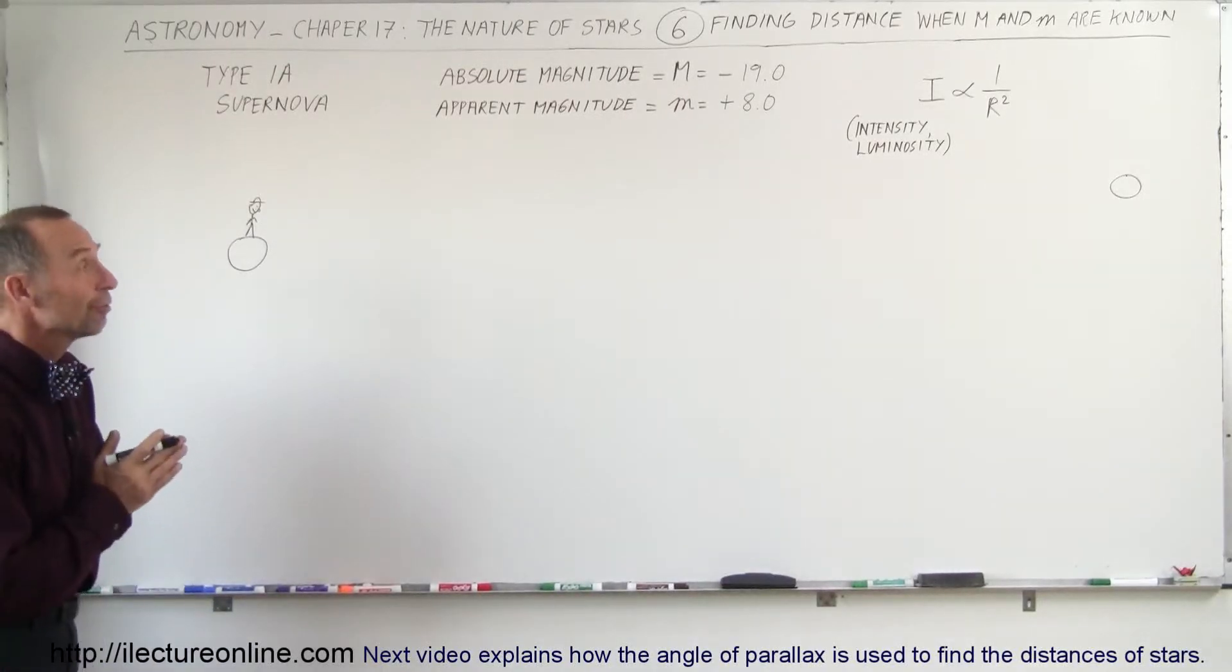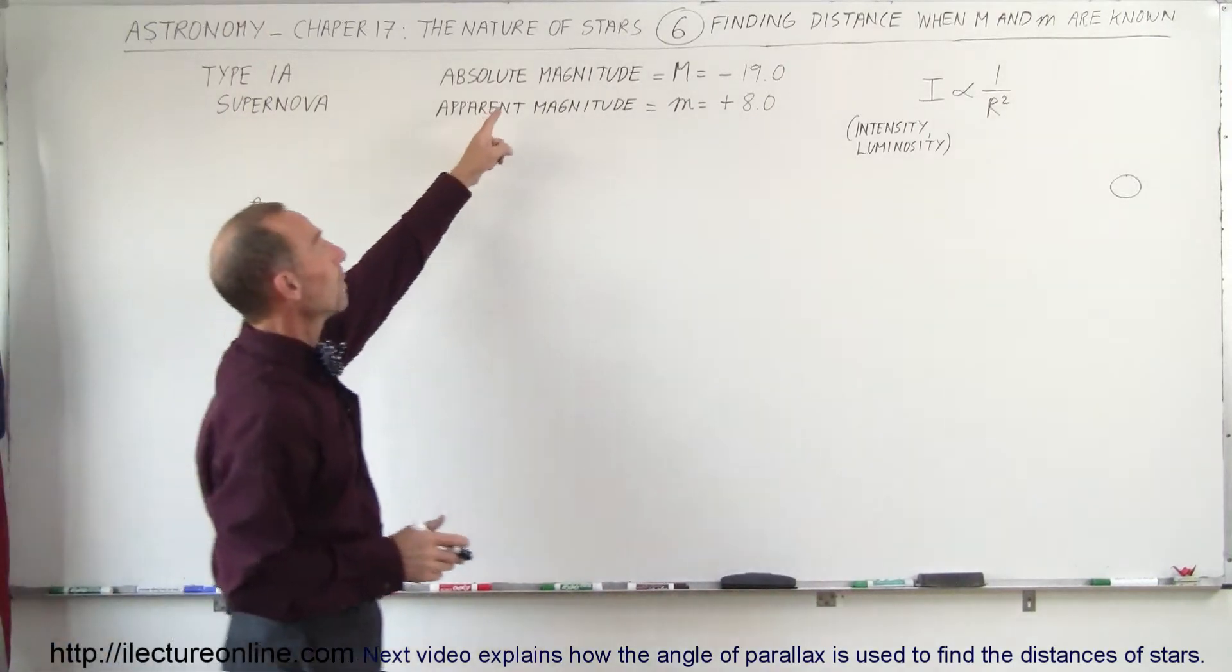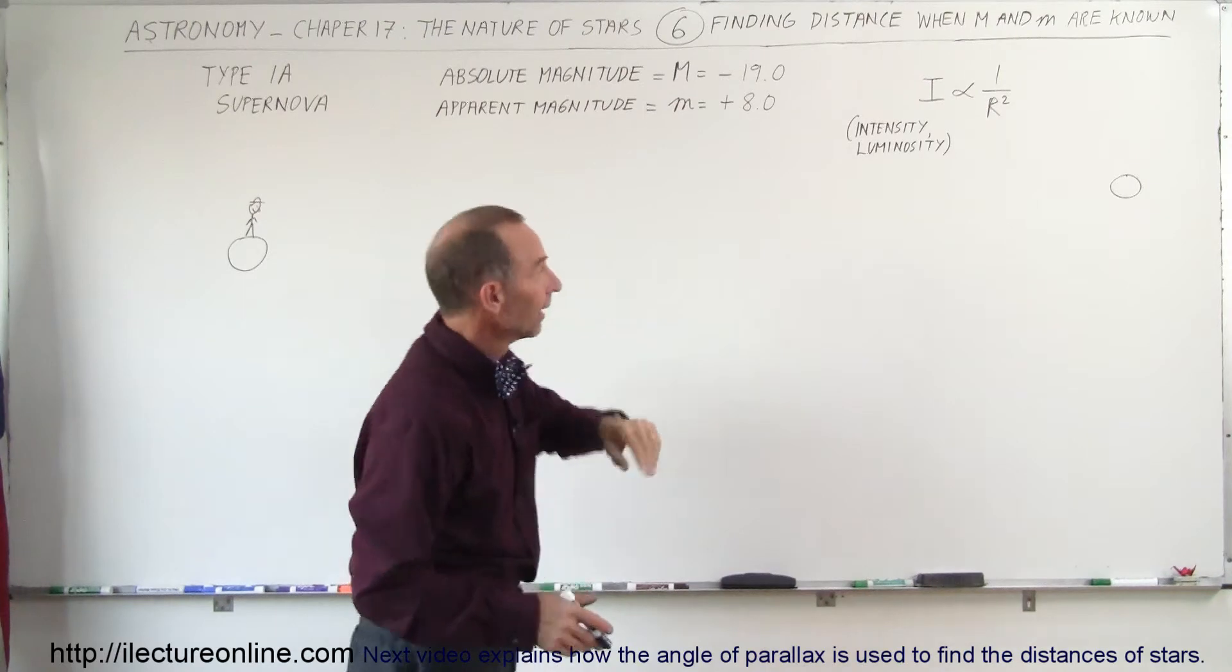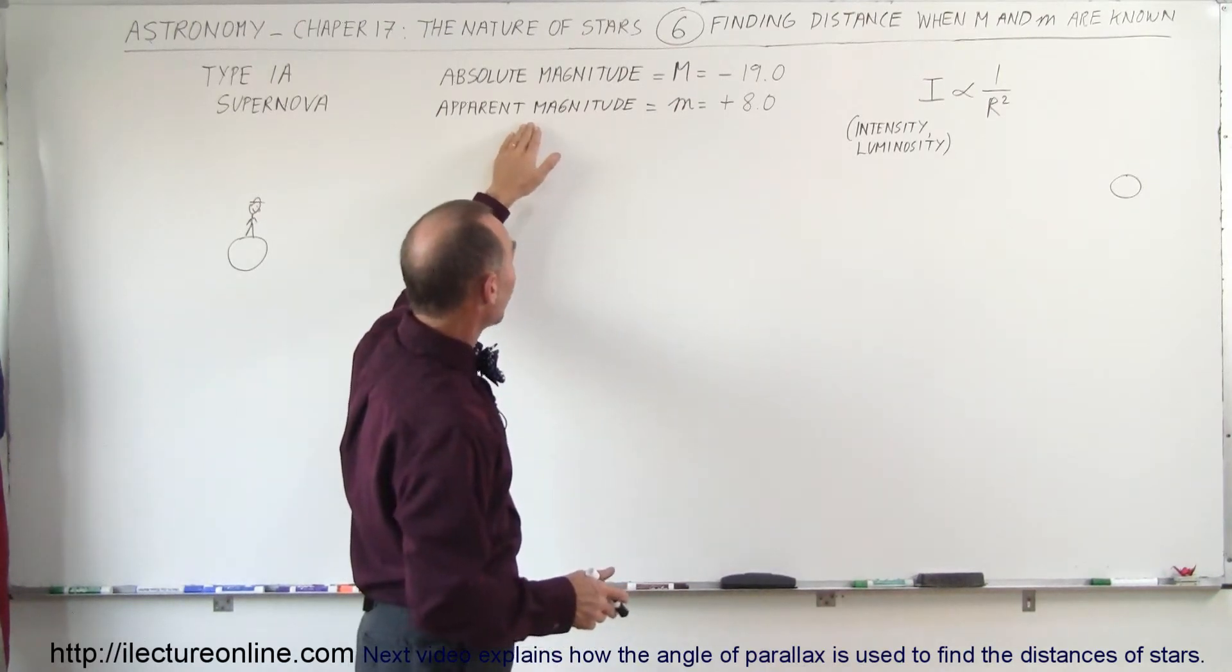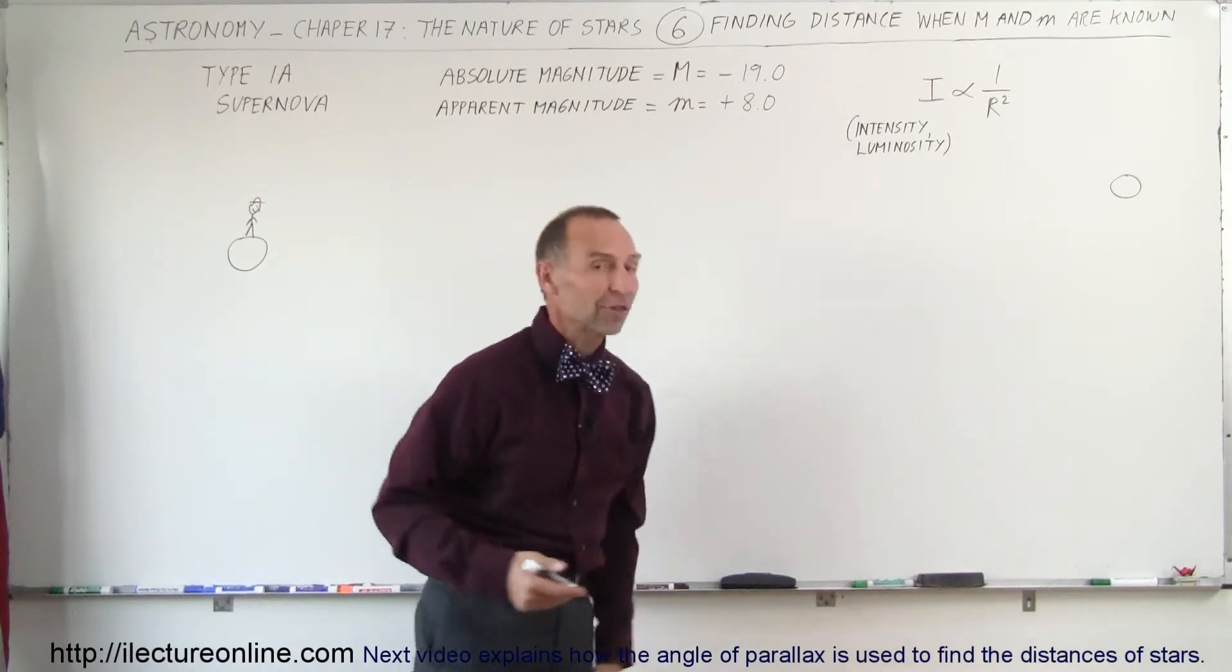Welcome to lecture online. Now we're going to find the distance to a supernova knowing that the absolute magnitude of a Type 1a supernova is about minus 19, and let's say that we're observing it and it has an apparent magnitude of plus 8.